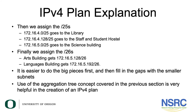We'll then move on to the /25 prefixes — we have three of them. The first /25, which is 172.16.4.0/25, is the first free available prefix after the wireless network and goes to the library building. Then 172.16.4.128/25 goes to the staff and student hostel. The last /25 prefix is 172.16.5.0/25 which goes to the science building. Finally we assign the remaining /26 prefixes — two of them: the arts building gets 172.16.5.128/26 and the languages building gets 172.16.5.192/26.